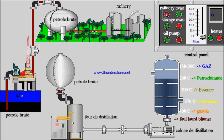After storing the crude oil we transfer it to the refinery using storage evacuation. Then we have refinery evacuation — this is after we've treated the oil and need to evacuate it. We also have a temperature regulator to regulate the temperature of the machine that warms the oil. Here we have the storage area and the distillation oven, and here is the color distillation column.